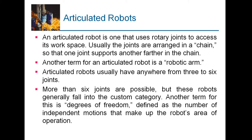More than six joints are possible, but these robots generally fall into a custom category. Another term is degree of freedom, defined as the number of independent motions that make up the robot's area of operation. It can generally be three, four, five, or six degrees of freedom. Three degrees of freedom means three rotatory axes, and three parallel axes means movement in the X, Y, and Z directions.